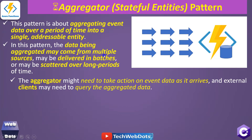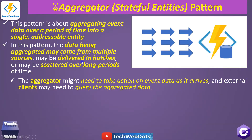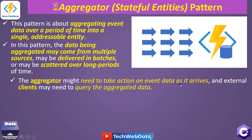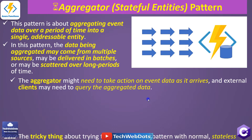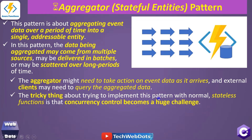The data being aggregated may come from multiple sources — these data are not all coming at the same time but arriving periodically. They may be delivered in batches or scattered over a long period of time. The aggregator might need to take action on event data as it arrives, and external clients may need to query the aggregated data.